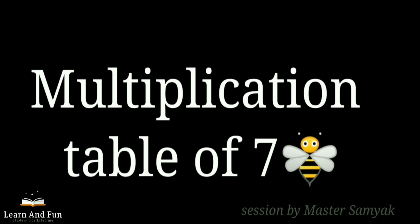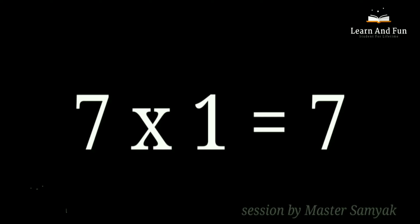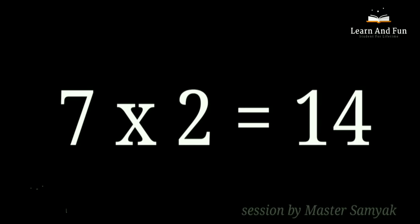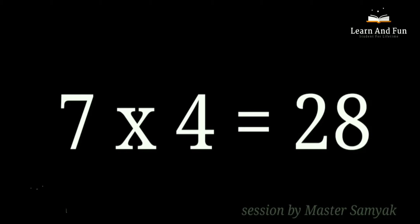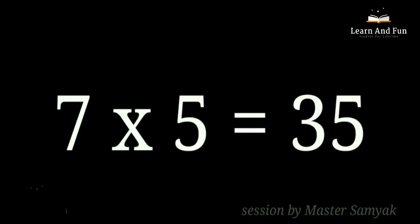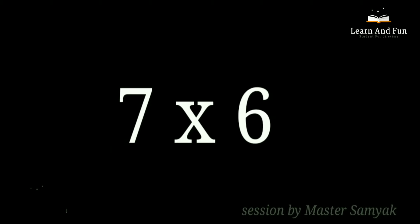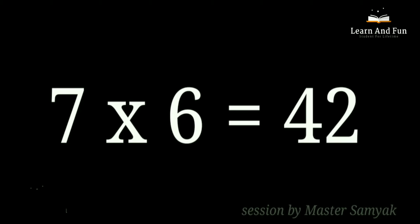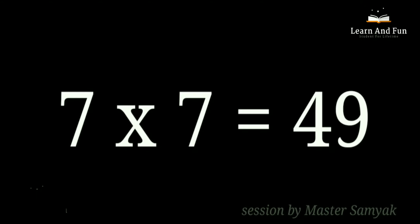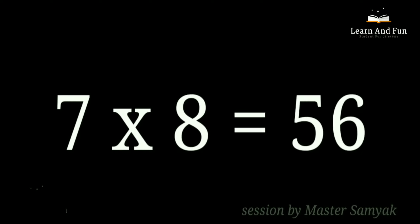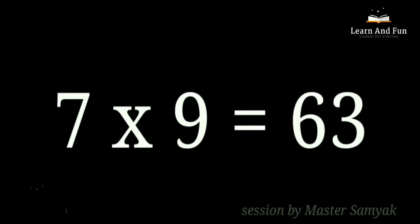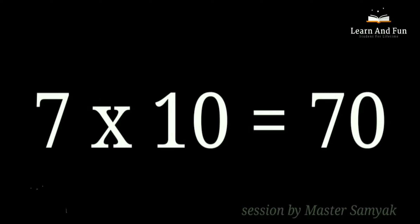Multiplication Table of 7. 7 ones are 7. 7 twos are 14. 7 threes are 21. 7 fours are 28. 7 fives are 35. 7 sixes are 42. 7 sevens are 49. 7 eights are 56. 7 nines are 63. 7 tens are 70.